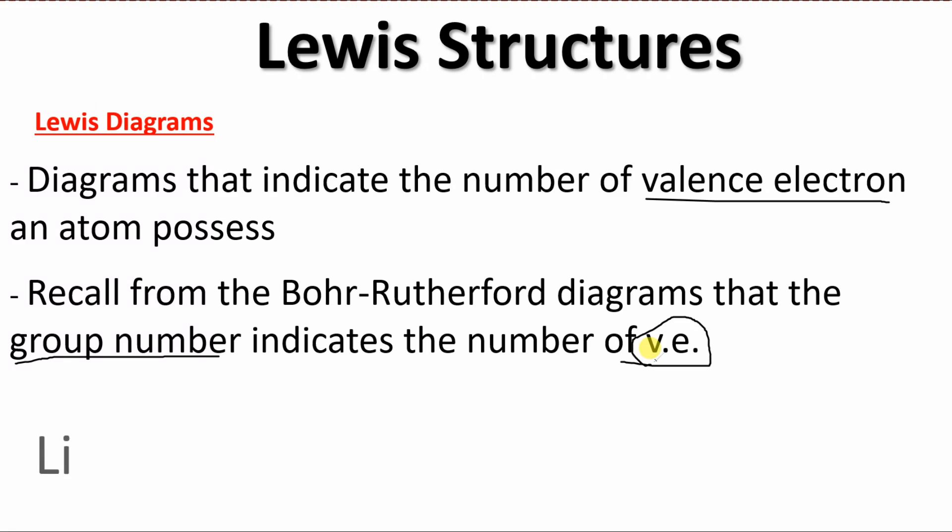So some examples. If we're looking at lithium that is in group one, it has one valence electron. You can draw it as a dot, an X, a heart, a triangle, whatever you want. I'm going to draw this one as a dot.